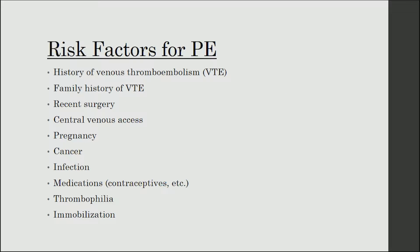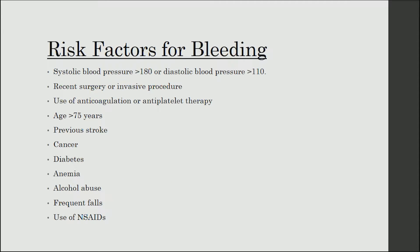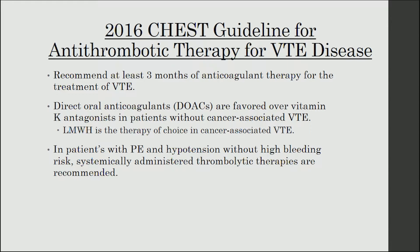Next, we're going to review the risk factors of PE. These include patients who have a history of venous thromboembolism or VTE, a family history of VTE, recent surgery, central venous access, pregnancy, cancer, infection, certain medications such as estrogen-containing contraceptives, thrombophilia, and any prolonged immobilization. In addition, we will review risk factors that place patients at a higher risk of bleeding, as these will be helpful in assessing which patients are candidates for thrombolytic therapy. These include uncontrolled hypertension with a systolic blood pressure greater than 180 or a diastolic blood pressure greater than 110, any recent surgery or invasive procedure, use of anticoagulation or antiplatelet therapy, an age of greater than 75 years, previous stroke, cancer, diabetes, anemia, alcohol abuse, frequent falls, and use of NSAID medications.